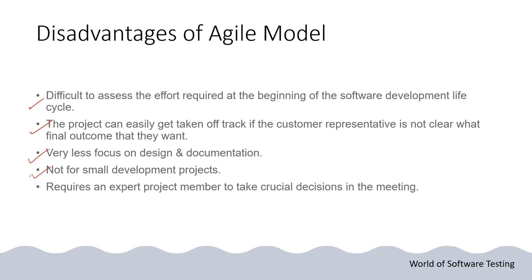The fourth disadvantage is that agile is not suitable for small development projects — it is designed for long-term projects. If you have a small project, it is better to go with the waterfall or V model. The fifth disadvantage is that it requires expert project members to take crucial decisions in meetings.